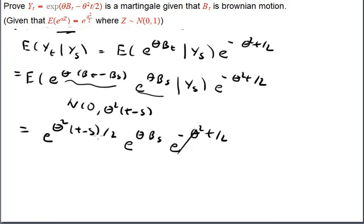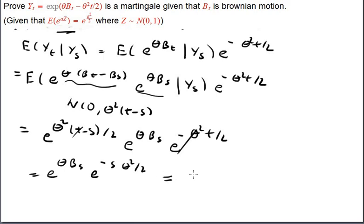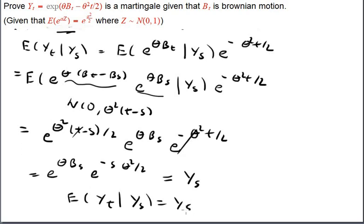There is some cancellation: the e to the θ²(t − s) over 2 from the MGF and e to the minus θ²t over 2 combine to leave e to the θB(s) times e to the minus θ²s over 2, which is exactly Y(s). Therefore, the expected value of Y(t) given Y(s) equals Y(s).